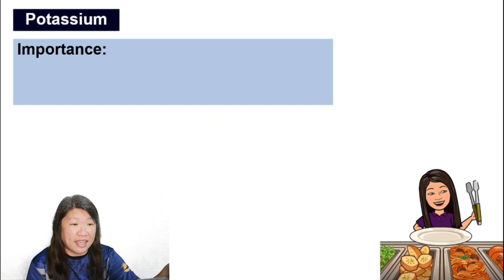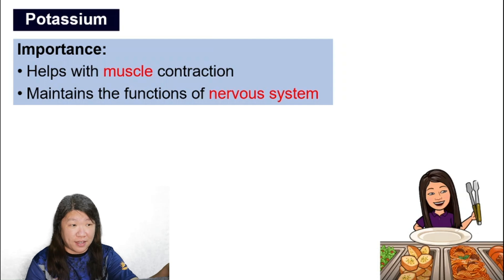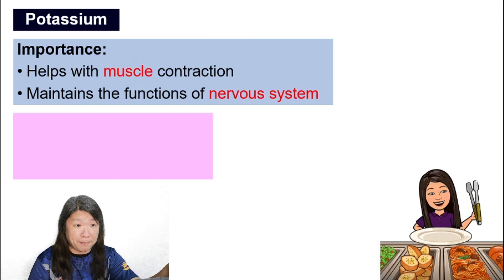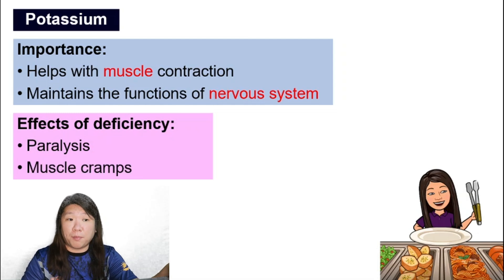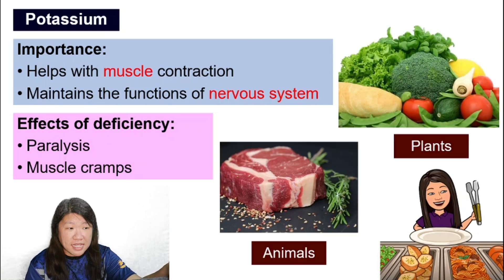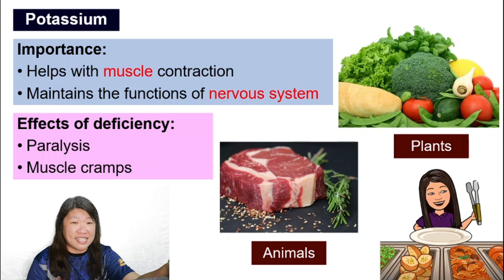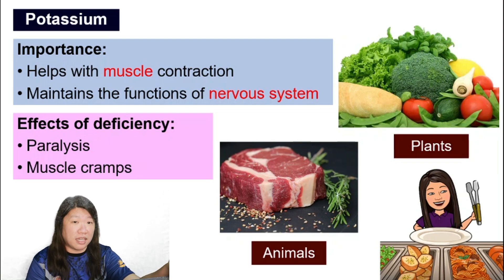Potassium is very important for muscle contraction and also maintains the functions of the nervous system. A deficiency of potassium can cause paralysis or muscle cramp. Potassium can be obtained from most plants and animals — plants like broccoli and spinach, and animals such as turkey, chicken, and beef.